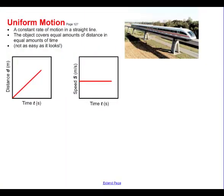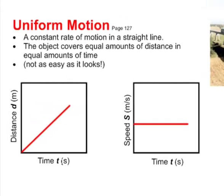Uniform motion is a situation that refers to constant motion in a straight line, or if you wish, the object covers equal amounts of distance in equal amounts of time. That's not as easy to do as it looks.